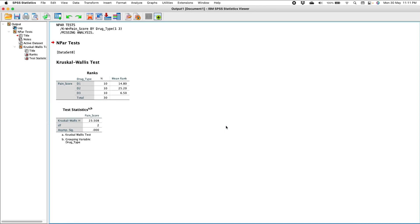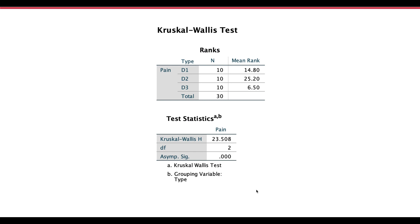In the output you will get two tables: Ranks and Test Statistics. The Test Statistics table shows a p-value of 0.000, which means since p is less than 0.05, the null hypothesis is rejected. There is a statistically significant difference in the pain score across the groups. The mean ranks are: drug 1 is 14.8, drug 2 is 25.2, and drug 3 is 6.5.